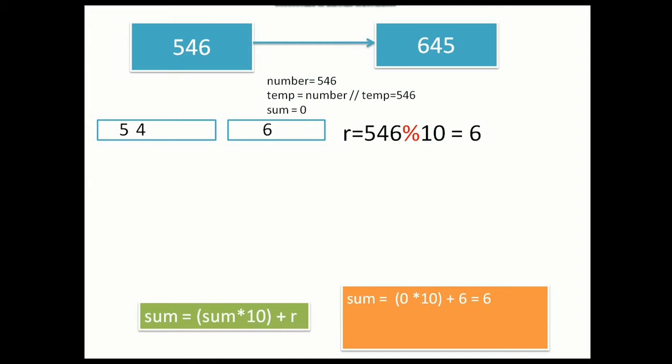Now 6 is the remainder, and when we take it into sum — 0 × 10 + 6 — it is 6. But in the next iteration it is going to be 6 × 10 + 4, which is 64. So we have to form the numbers this way. That is why we use the formula sum × 10 + remainder. Whatever sum remains, it adds the next digit by first shifting the existing digits left.